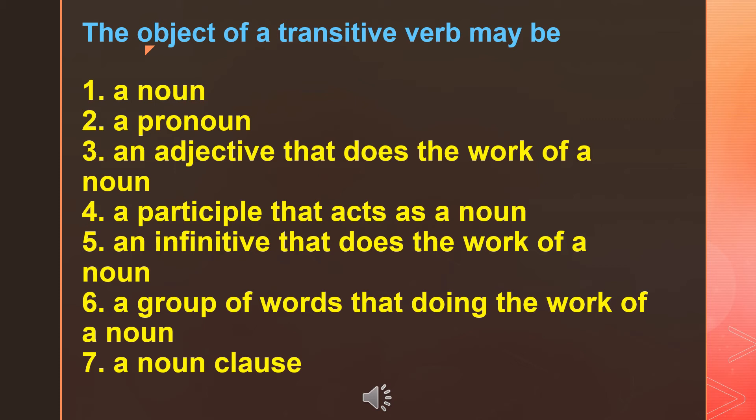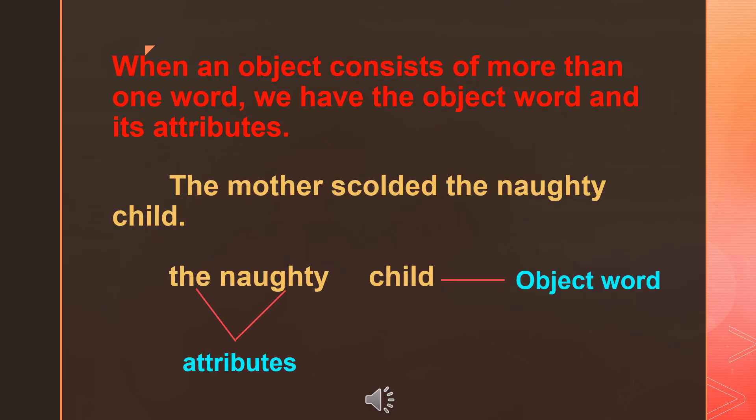When an object consists of more than one word, we have the object word and its attributes, just like we have attributes for the subject word. In the last class, we already learned about the subject word and its attributes. In the same way, the object also has an object word and its attributes.